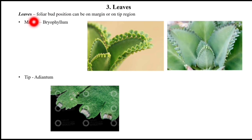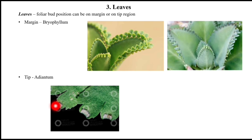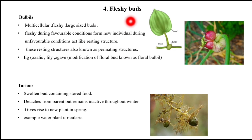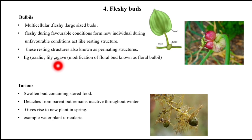Leaves: foliar bud position can be on the margin or on the tip region. A leaf in which a bud is formed is called a foliar bud — it can be marginal as in Bryophyllum, or terminal/tip as in Adiantum. This is helpful to form a new individual. Last is fleshy buds — bulbils and turions. Bulbils are multicellular, fleshy, and large-sized buds. They form new individuals in favorable conditions and behave as resting perennating structures in unfavorable conditions. Examples are Oxalis, lily, and Agave.